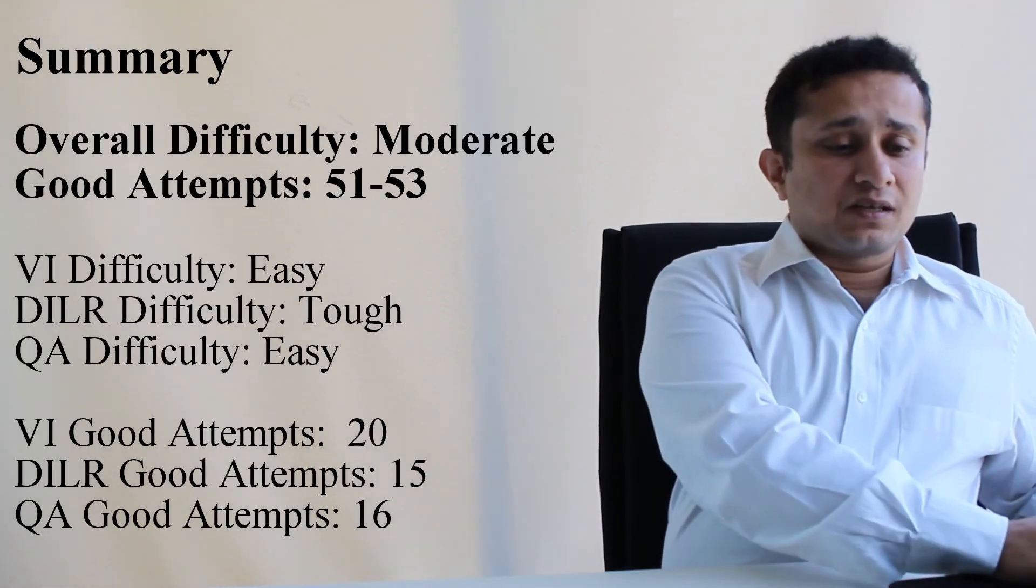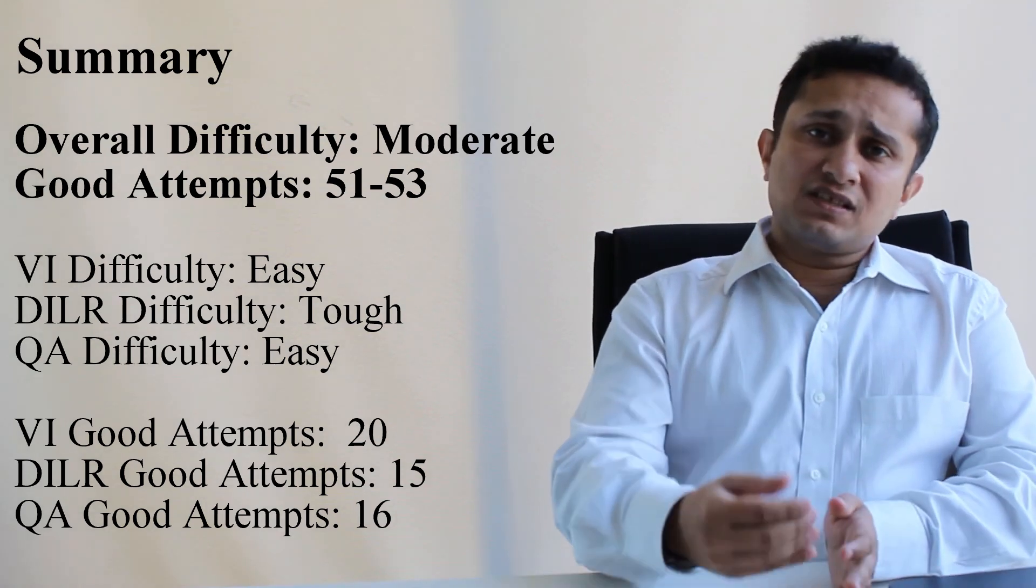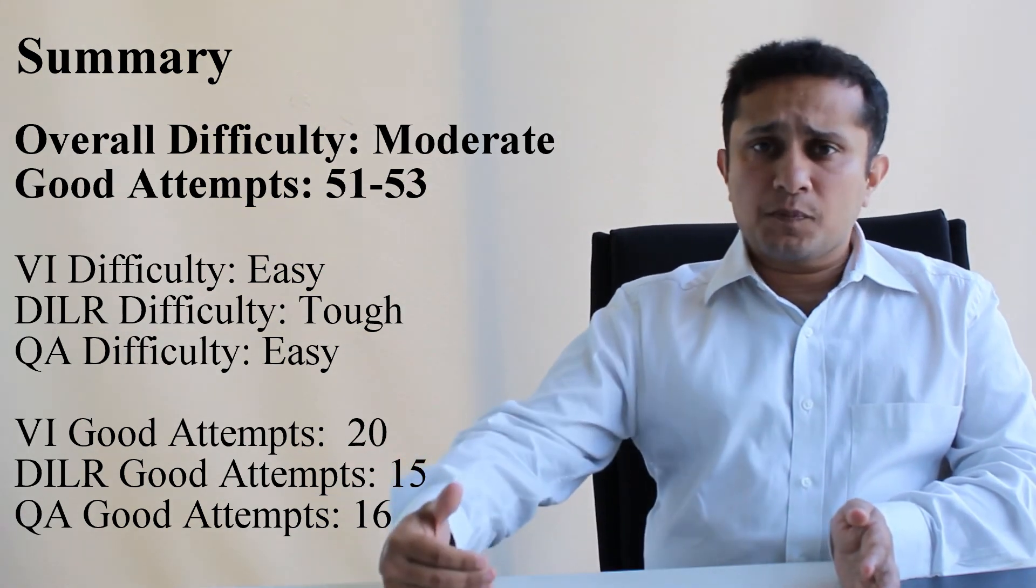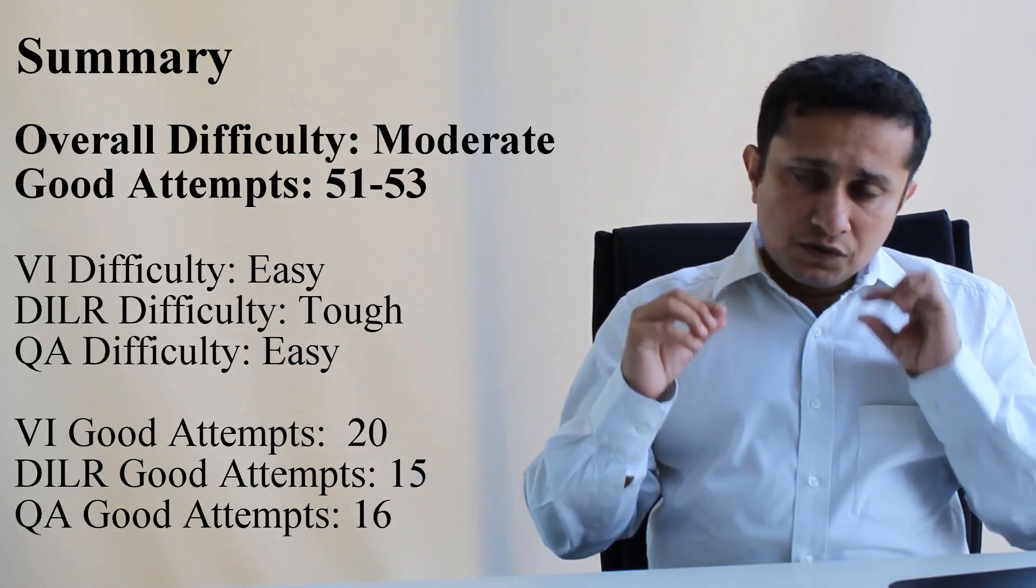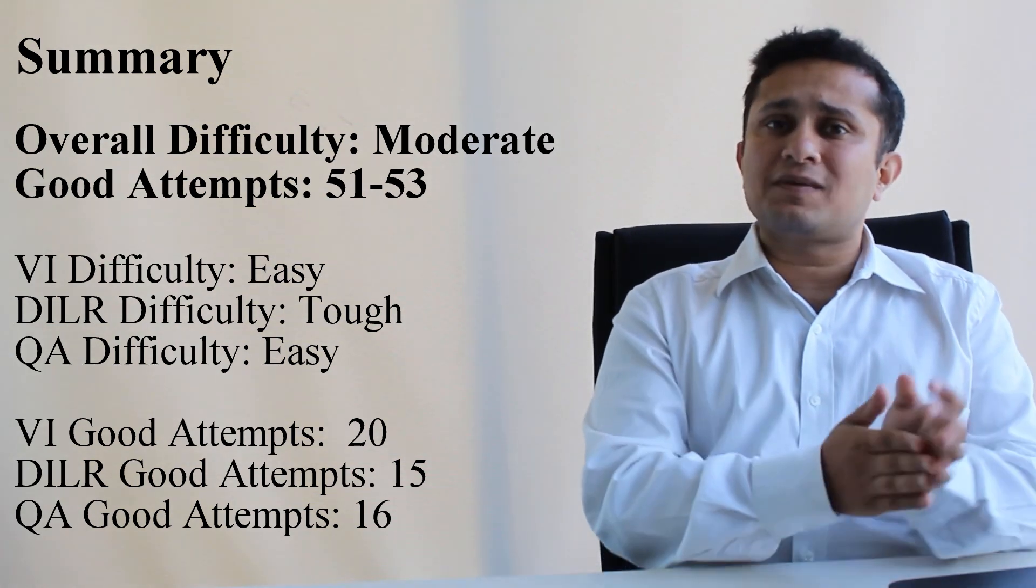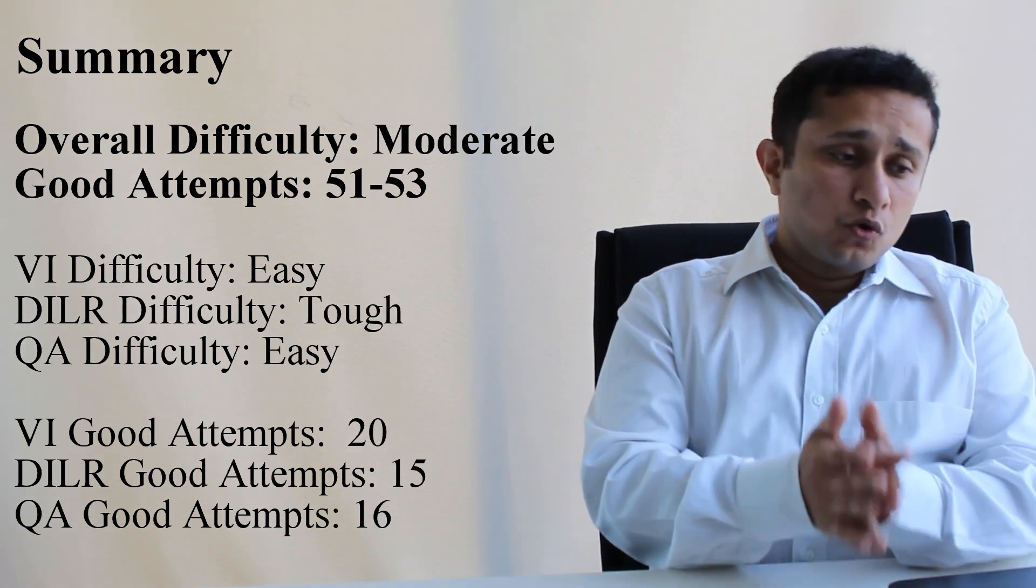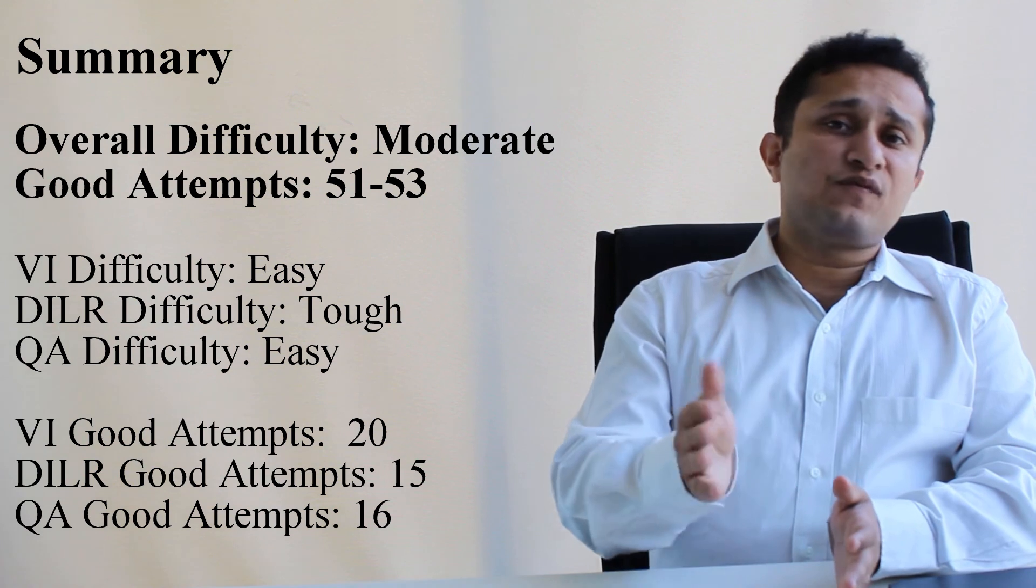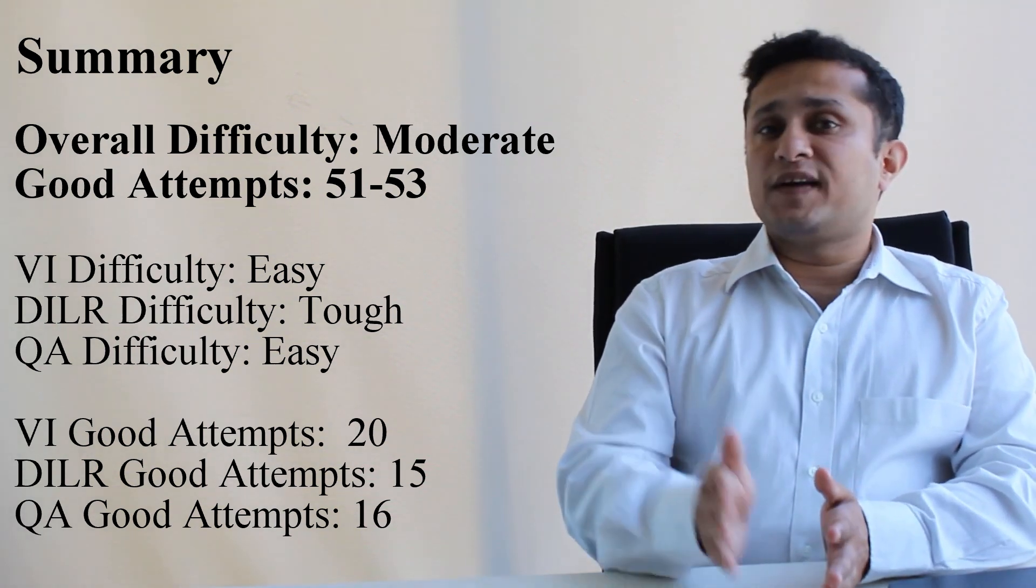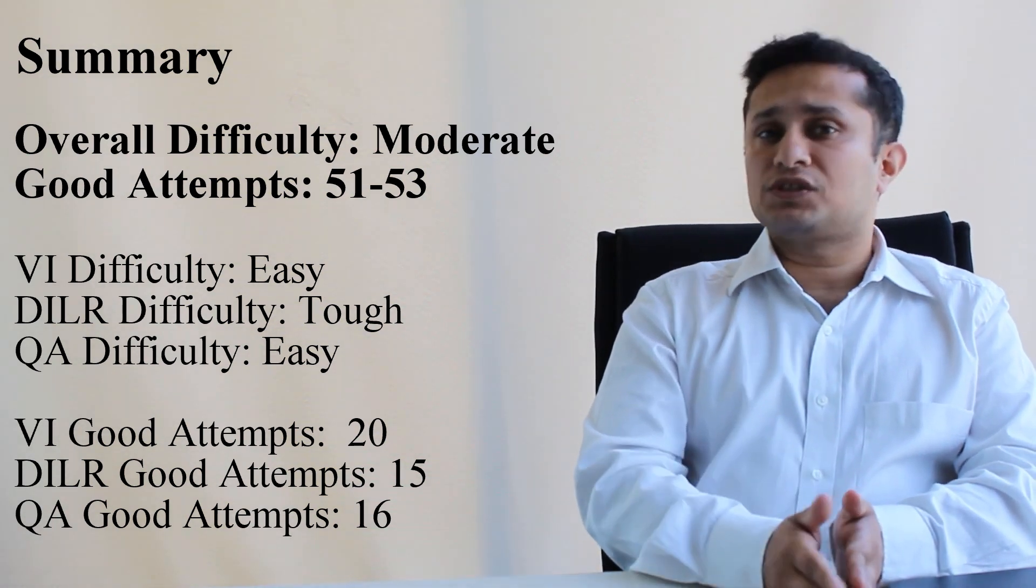In general, speaking about this paper, easy to moderate with a slightly easier verbal and at par DILR, at par quant. So the verbal section took down the difficulty level by some percent or by a notch or so, but in general this was similar to CAT. The number of good attempts here would be 20, 15, and 16. Typically 50 to 52 or 51 to 53 attempts would be a good performance as far as this mock is concerned.